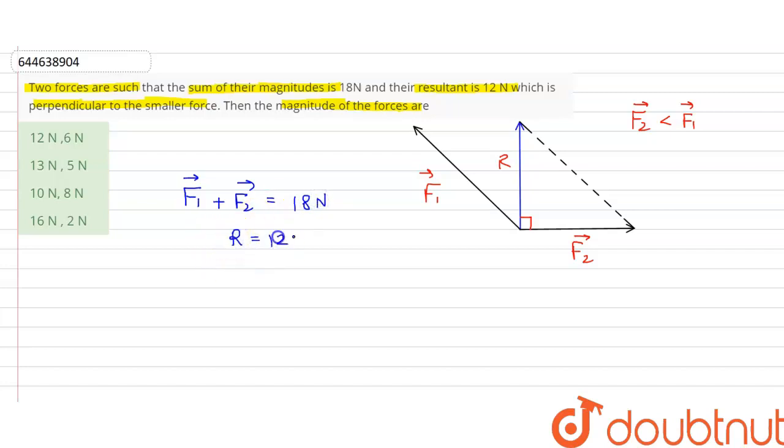And also resultant has the value of 12 Newton. So students, if we apply the parallelogram law in this figure, then we can say that this vector is also known as F1 vector. This is shifting parallelly, so this is F1 vector.